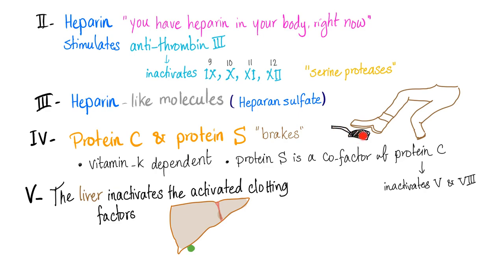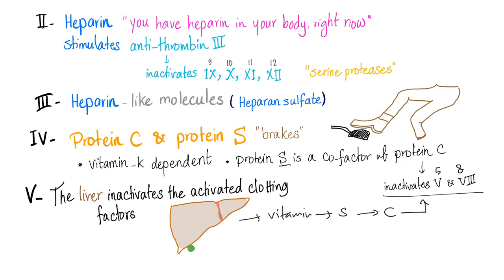Protein C and S are the brakes of the coagulation process. Protein C and S are vitamin K dependent. Protein S is a cofactor of protein C. Both of them will inactivate factor 5 and factor 8 in the intrinsic coagulation pathway. The liver has vitamin K in it, and synthesizes protein S and protein C, which then inactivate factors 5 and 8 in the intrinsic coagulation cascade.